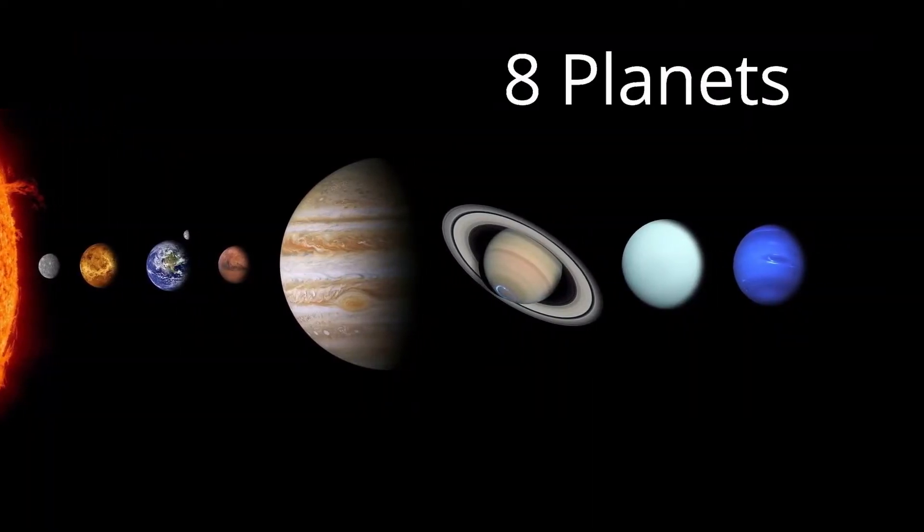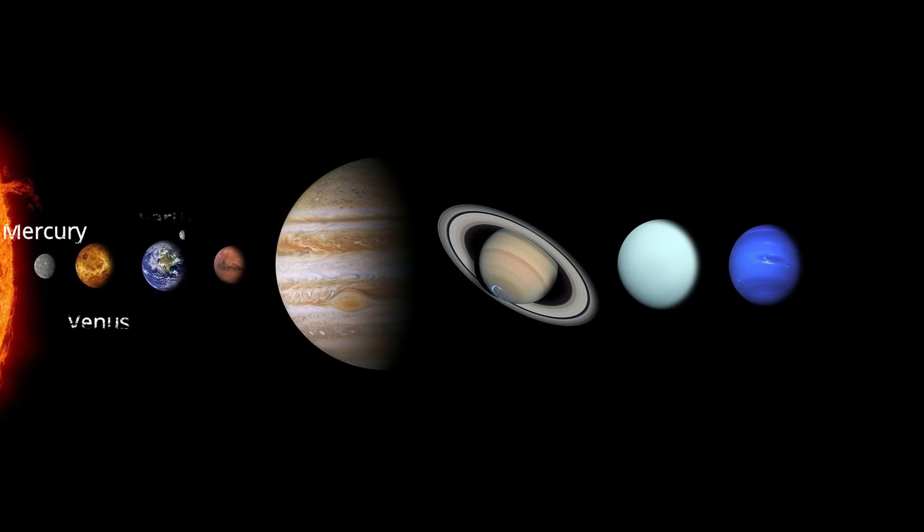There are eight planets in the solar system: Mercury, Venus, Earth, Mars, Jupiter, Saturn, Uranus, and Neptune.